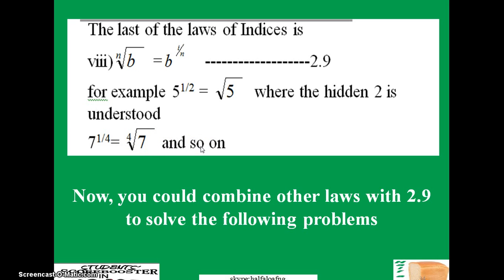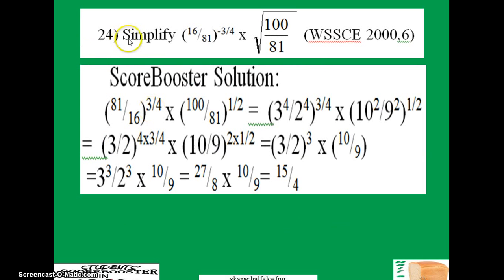So now we could combine all those laws with law 2.9 to solve for the problems. Let's take an example of this one: simplify 16 over 81 raised to power minus three-fourths times 100 over 81. What we're going to do here is just apply law 2.9. Just take the factors of 81, 16, and 181, so that's what I did here in the next step.